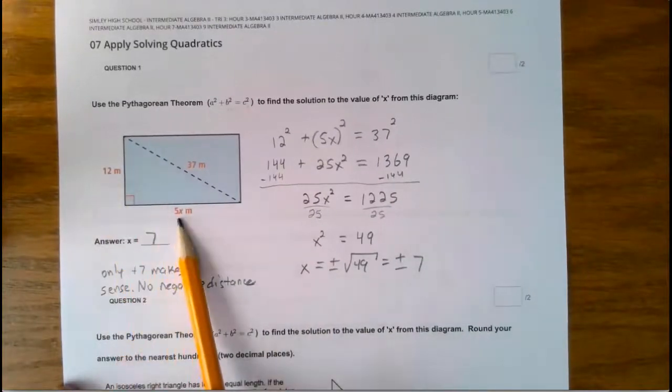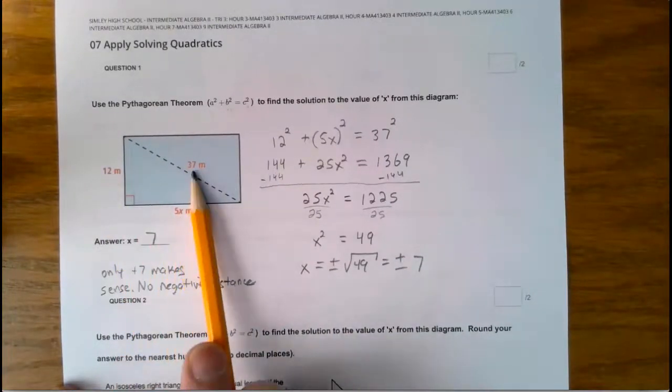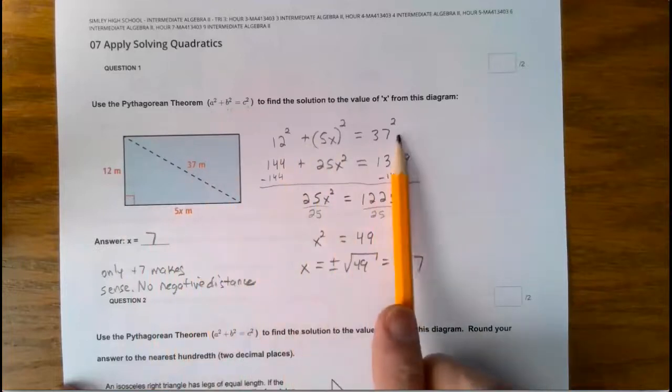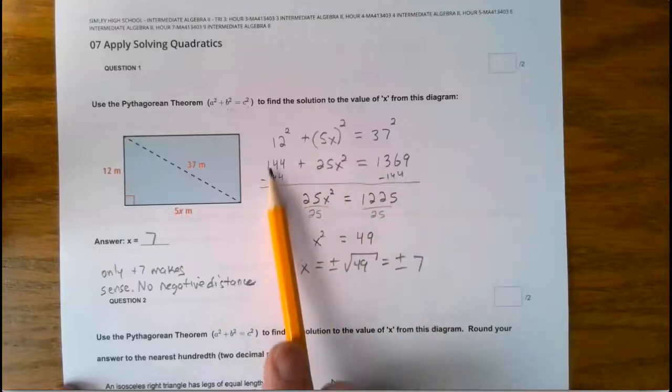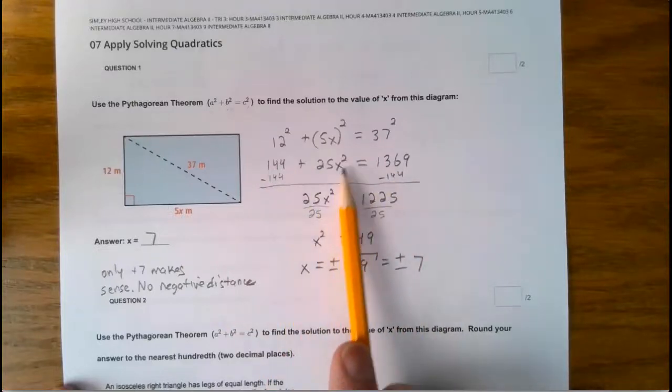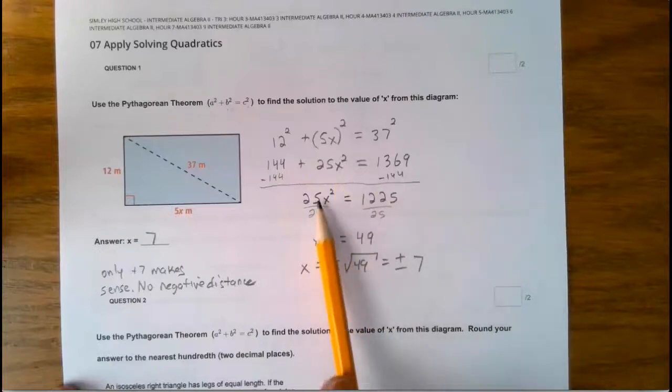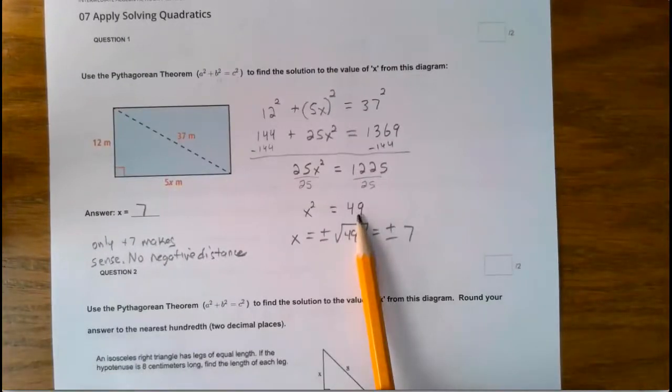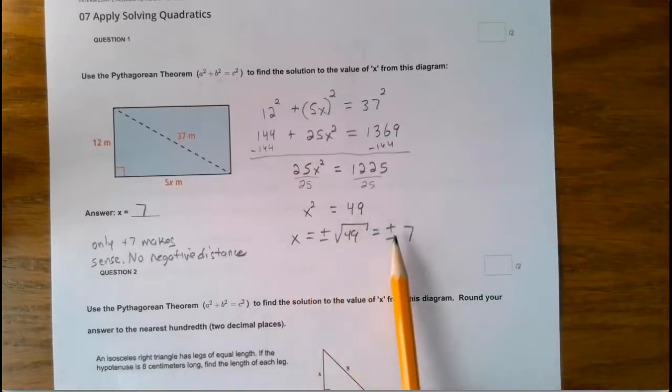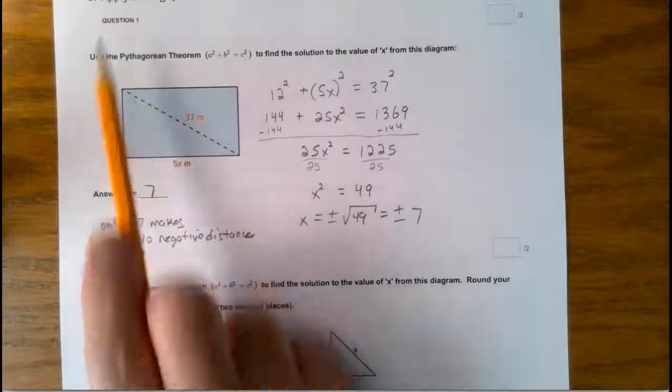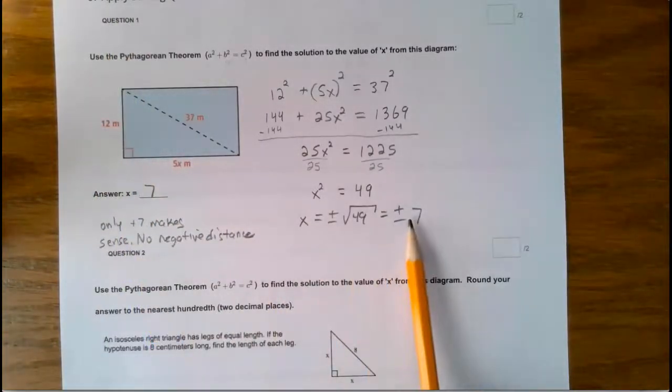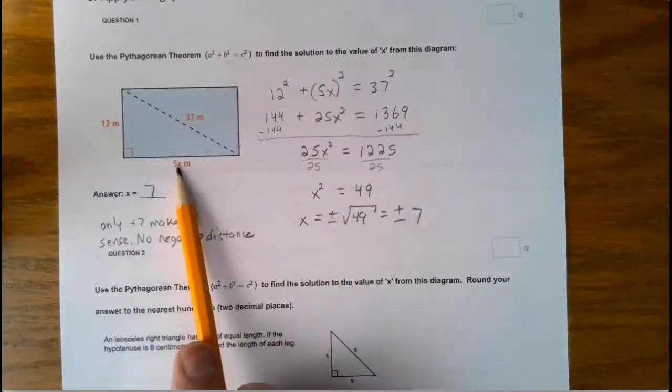So it's 12 squared times 5x squared equals 37 squared. That's the setup right here. I multiplied it out. I subtracted 144 from both sides because I'm trying to isolate that x squared. Then I divided both sides by 25 and I got 49. The square root of both sides, plus and minus 7. However, in the real world, in these apply problems, one of the answers doesn't make sense. It only makes sense for it to be positive 7.